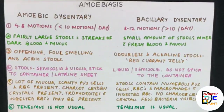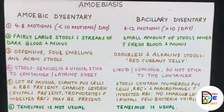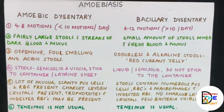Moving to the last part — the differences between amoebic dysentery and bacillary dysentery. In amoebic dysentery there are 4 to 8 motions per day, less than ten. In bacillary dysentery the frequency is much higher — more than ten per day, possibly up to twelve. In amoebic dysentery the stools are fairly large with streaks of dark blood and mucus; in bacillary dysentery the stools are mixed with fresh blood and mucus but are smaller in amount.